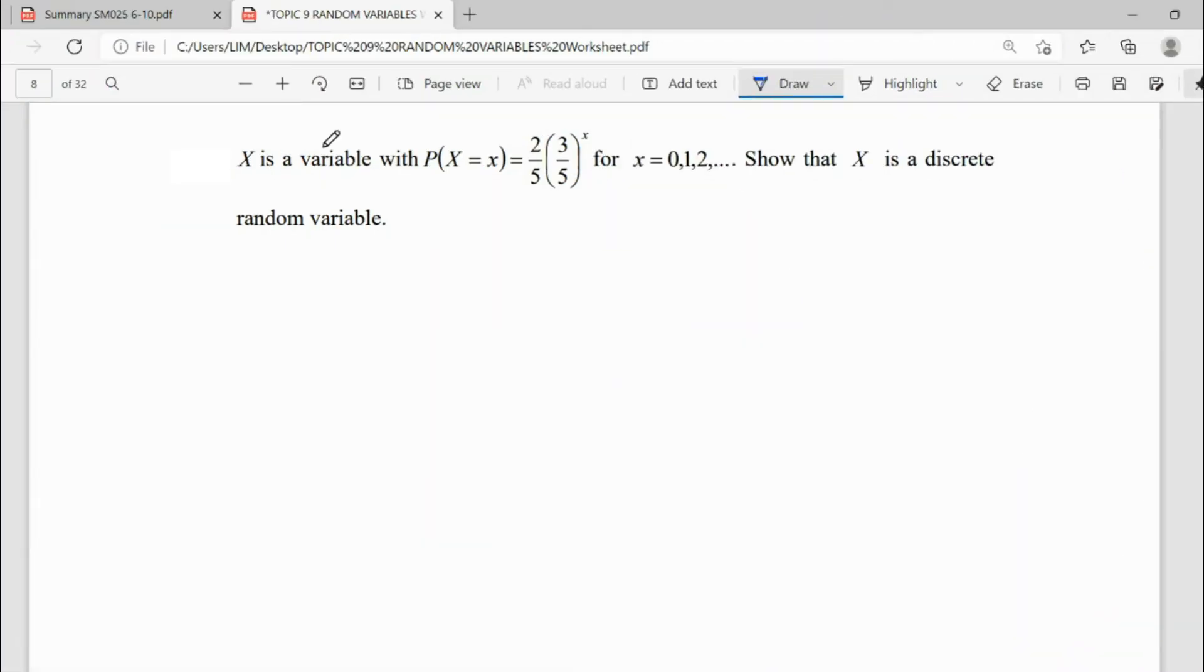For this question, they say X is a variable but didn't tell us why it's a variable. Given the property with this formula, we can see X equals 0, 1, 2, and so from here we know this is discrete.